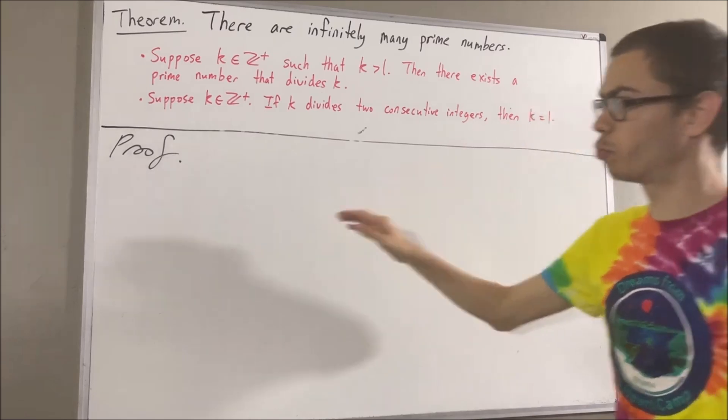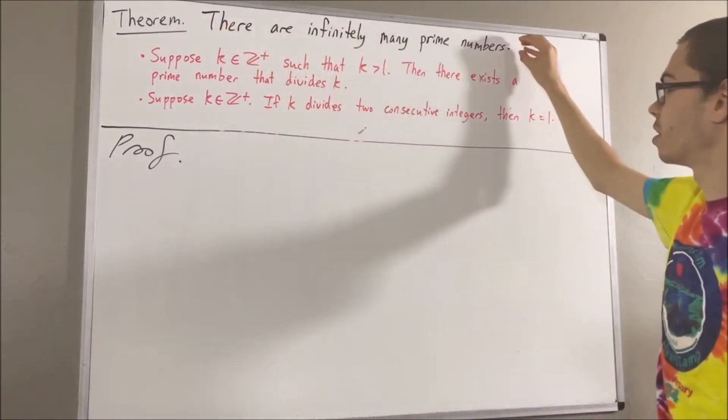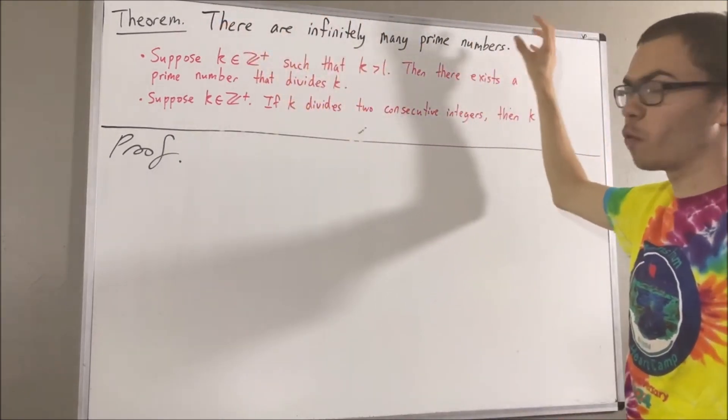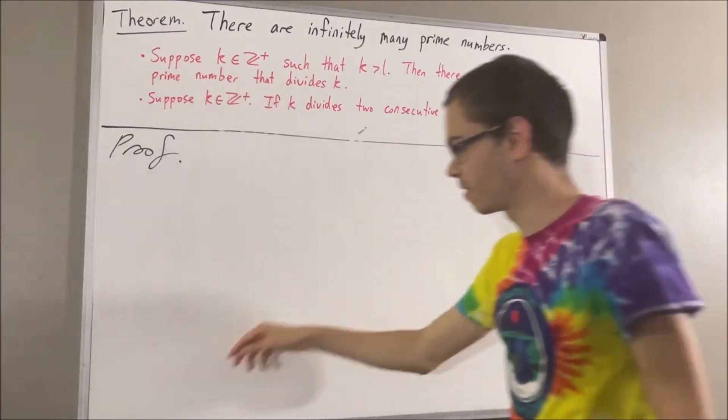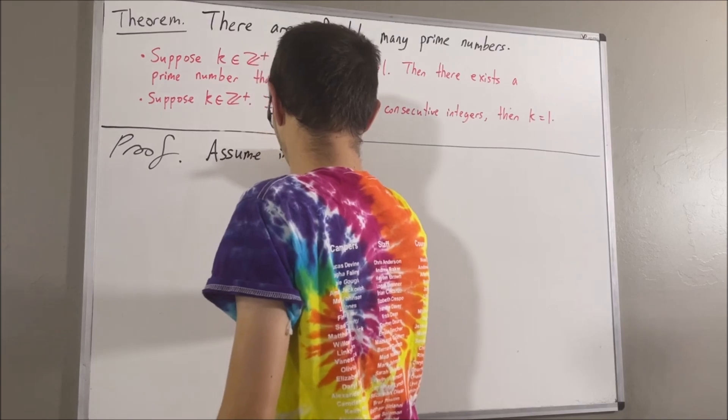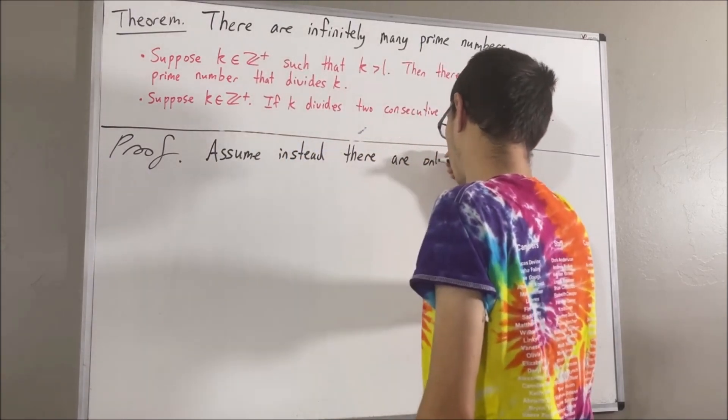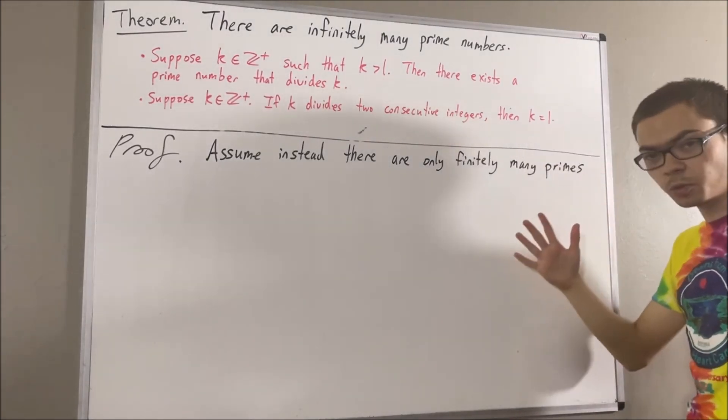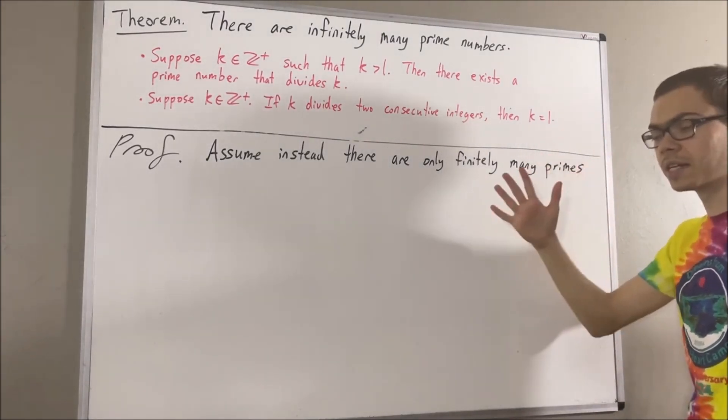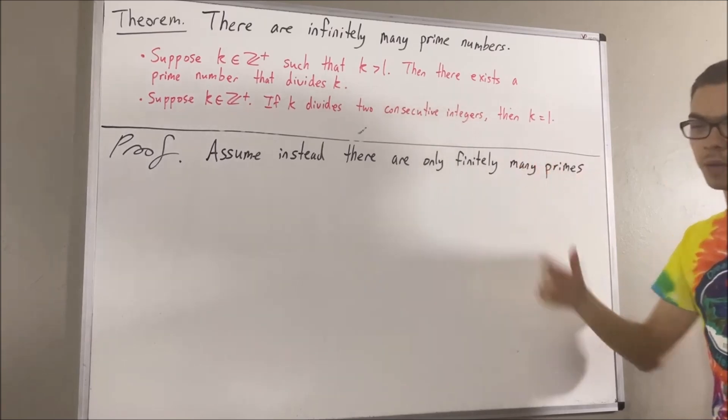Okay, so now let's get into proving this theorem. To prove it, let's assume for a contradiction we instead have finitely many prime numbers. We'll say that p1, p2, dot dot dot, pn is a list of every prime number.